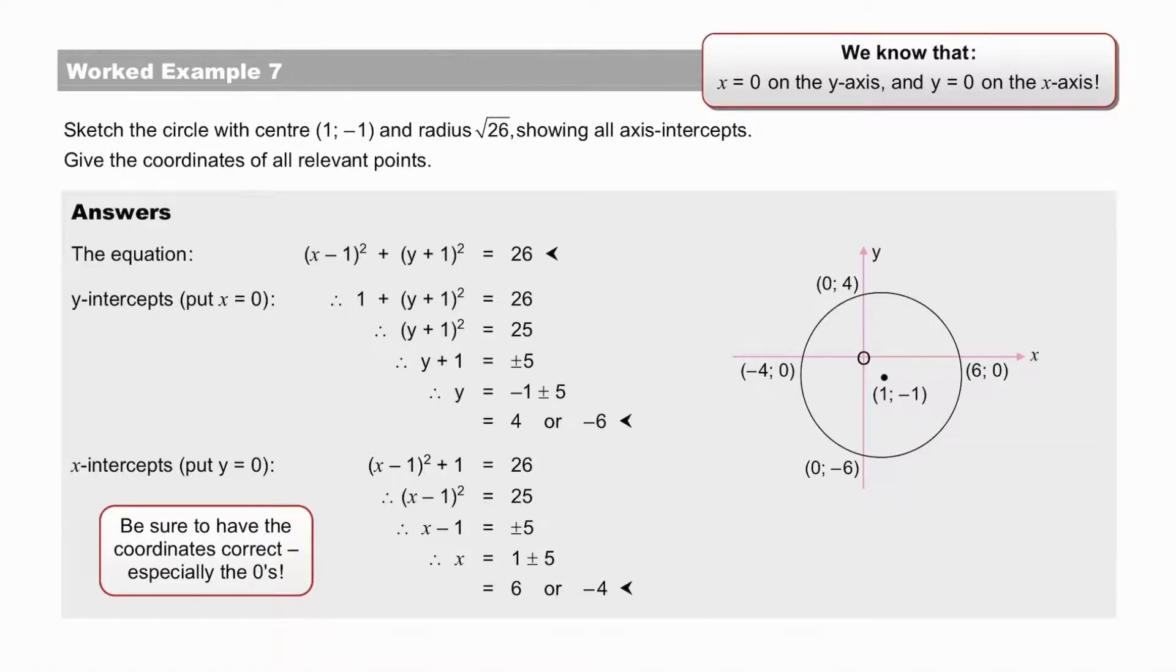Pause to check worked examples 7 and 8, which focus on axis intercepts. And we know that x is 0 on the y-axis and y is 0 on the x-axis. Be sure to have the coordinates correct, especially the zeros, 0 as x-coordinates on the y-axis and 0 as y-coordinates on the x-axis.